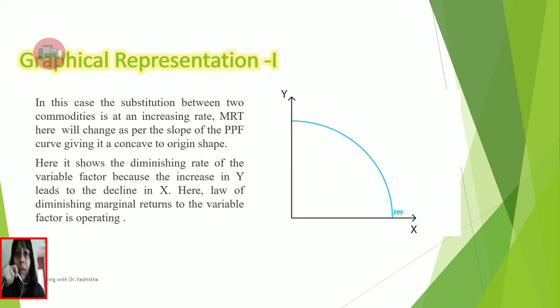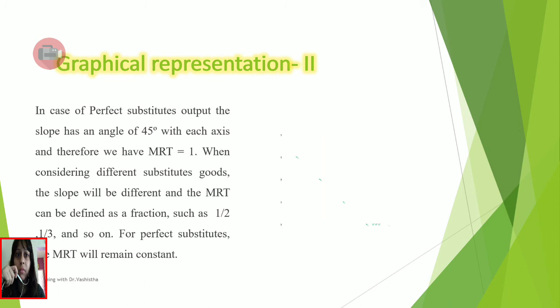Now the second part of the graphical representation shows another situation where these two goods are perfect substitutes for one another. Here MRT will be equal to 1 throughout, and that is how the slope has an angle of 45 degrees. Why is this so? Because when considering substitute goods, these are goods where one good can be substituted perfectly for another good.